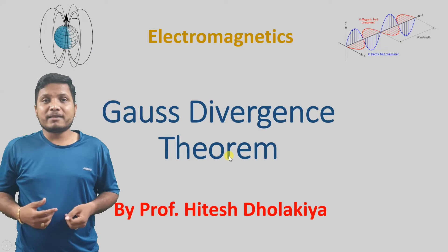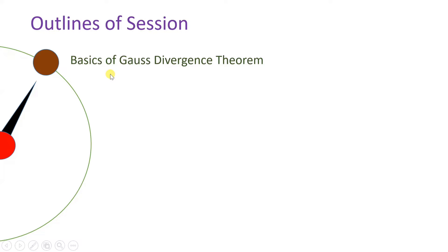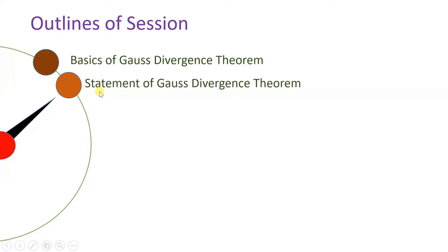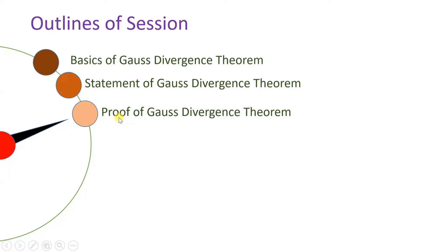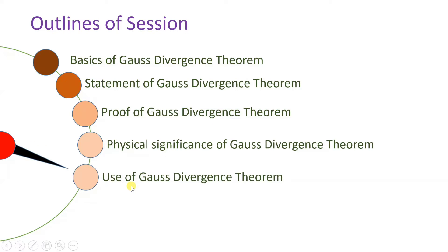To understand Gauss Divergence Theorem, these are my session outlines. First I'll discuss the basics, then explain the basic statement, then the proof, then the physical significance with examples showing how the theorem explains the position of source and sink, and finally some uses of Gauss Divergence Theorem.